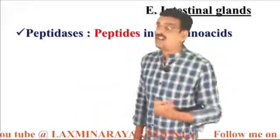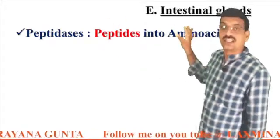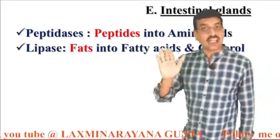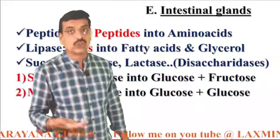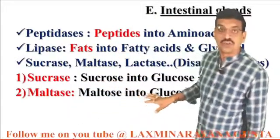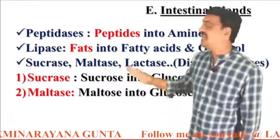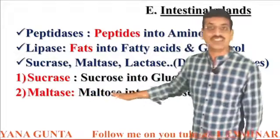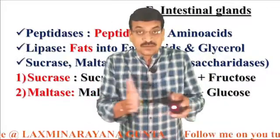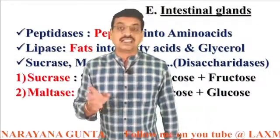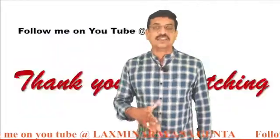The enzymes of intestinal juice and their actions: peptidases act on peptides and convert them into amino acids — the final absorbable form of proteins; lipase converts fats into fatty acids and glycerol; sucrase converts sucrose into glucose and fructose; maltase converts maltose into glucose and glucose — salivary amylase digests starch into maltose, and maltase then further breaks maltose into two glucose molecules; lactase converts lactose into glucose and glucose. These are the different enzymes of intestinal juice and their actions.